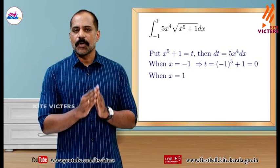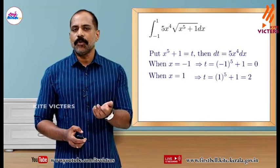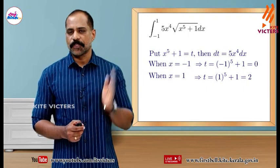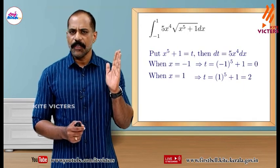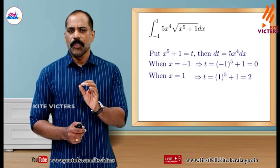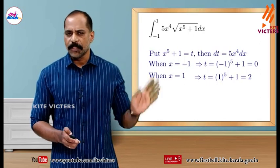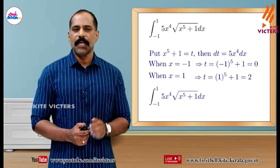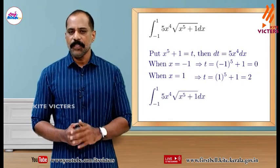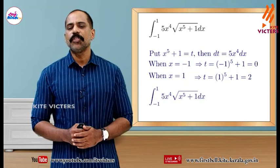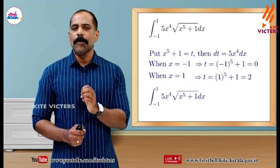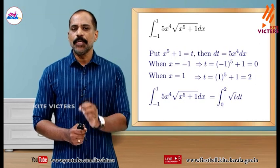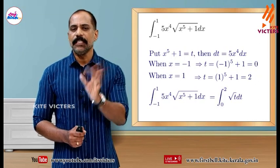The upper limit: when x is equal to 1, t is equal to 1 raised to 5 plus 1. 1 raised to 5 is 1, and 1 plus 1 is 2. So the upper limit is 2. The integral from minus 1 to 1 of 5x⁴ into root of x⁵ plus 1 dx equals the integral from 0 to 2 of root t dt.